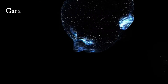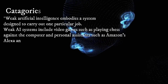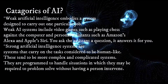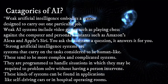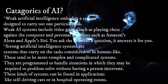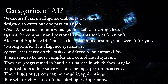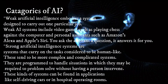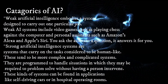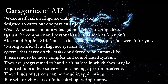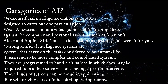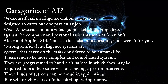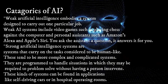Artificial intelligence can be divided into two different categories: weak and strong. Weak artificial intelligence embodies a system designed to carry out one particular job. Weak AI systems include video games such as playing chess against the computer, and personal assistants such as Amazon's Alexa and Apple's Siri. You ask the assistant a question, it answers it for you.